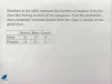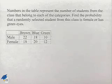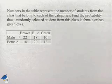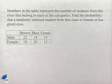Here's another problem dealing with probability. Numbers in the table represent the number of students from the class that belong to each of the categories. Find the probability that a randomly selected student from this class is female or has green eyes.